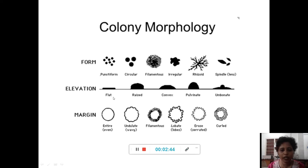Coming to the elevation, some would be flat, some would have a raised colony, sometimes it can have a convex colony, it can have a pulvinate colony or an umbonate colony. And if you look at the margin of the bacteria, sometimes it can have an entire margin or it can have an undulate margin or it can have a filamentous margin, a lobate margin, an erose margin or a curled margin. These are all possible in the case of different bacteria forming different colony morphologies.